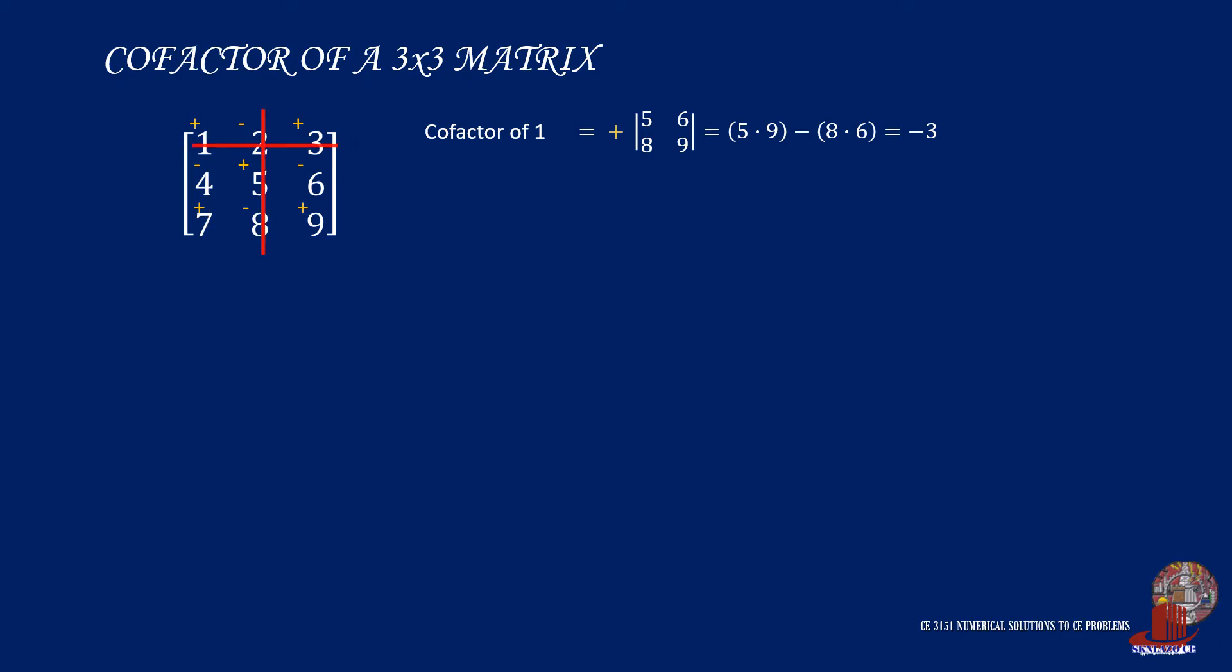Take the cofactor of 2 as the negative result of the determinants 4, 6, 7, and 9, which then turns into the negative of 4 by 9 less 7 by 6, which is taken as the negative of negative 6 resulting to positive 6. How about the cofactor of 3? This has a positive sign, so simply take the determinant of 4, 5, 7, and 8, which is then computed as 4 by 8 less 7 by 5 or that is negative 3.